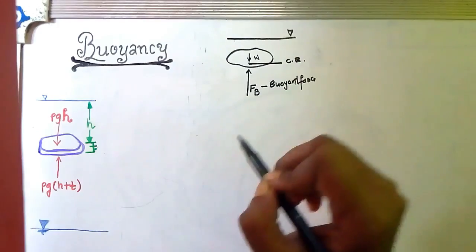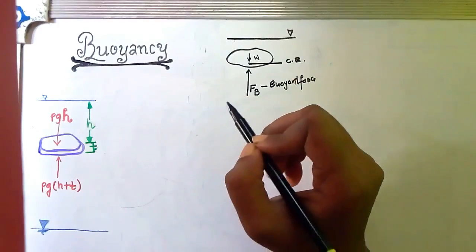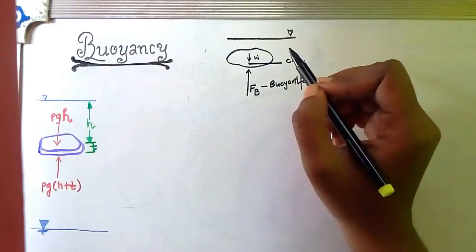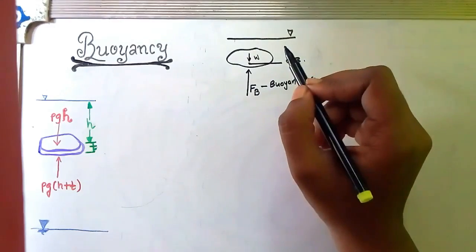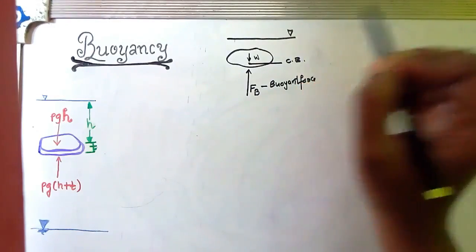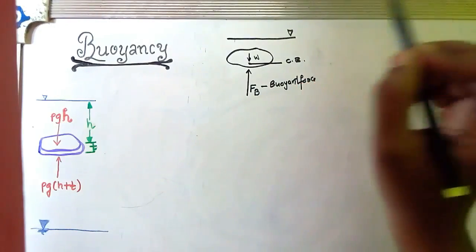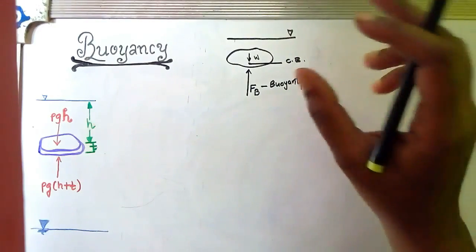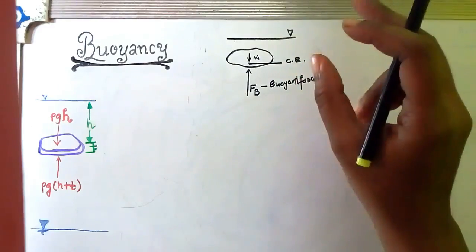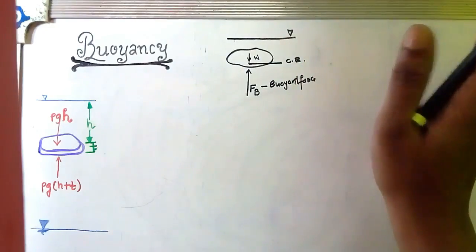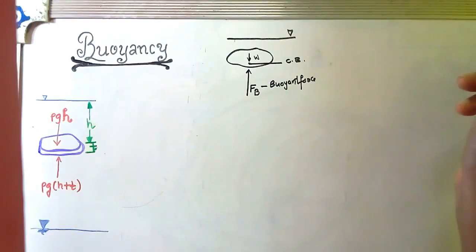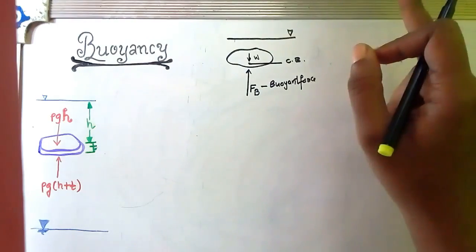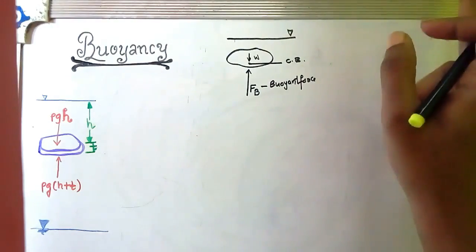This buoyant force acts at a certain point on the body, and that point at which the buoyant force acts on the body is called the center of buoyancy. In a fluid, we already have hydrostatic (normal) force. The weight of the fluid is exerted by the fluid, that's why the force is hydrostatic force. So, buoyant force is a hydrostatic force.